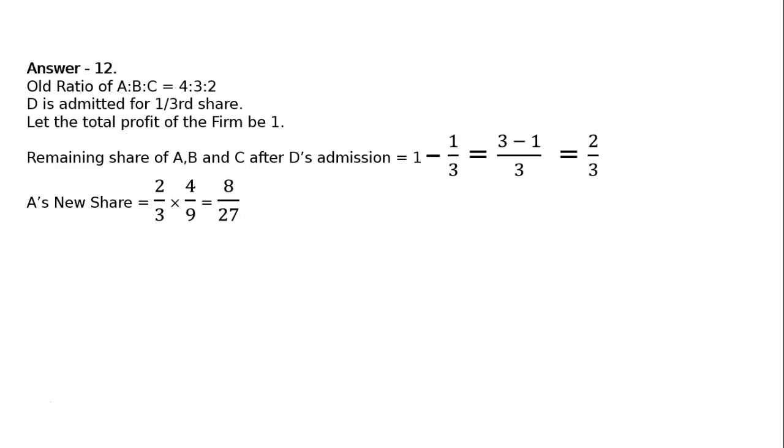Hence A will be taking 4 by 9, that is 8 by 27. B will be taking 3 by 9 of 2 by 3, that is 6 by 27. C will be taking 2 by 3 multiplied by 2 by 9, that is 4 upon 27.